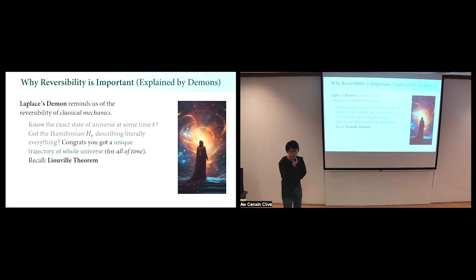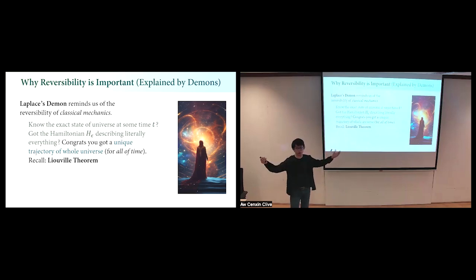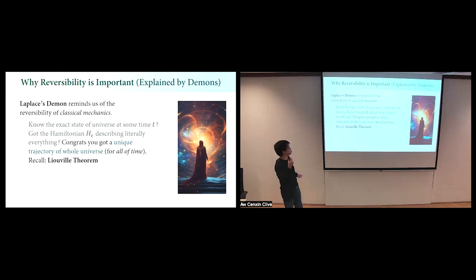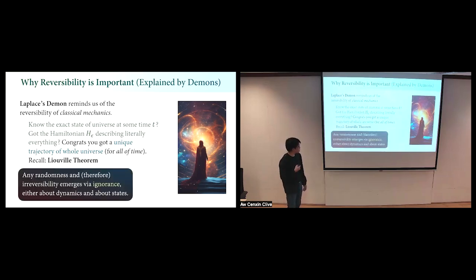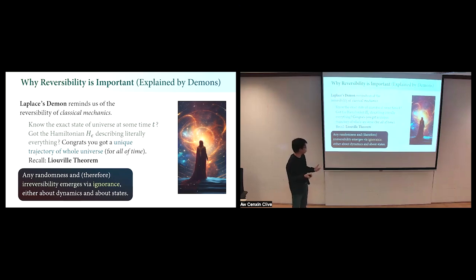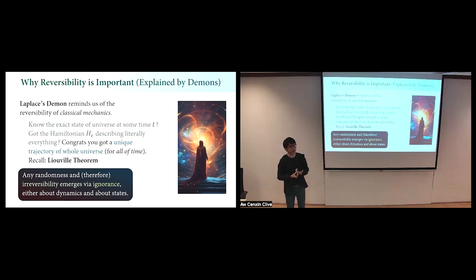Essentially, how does it go? If there's a kind of super-intelligent being - Laplace's demon - that has a cosmic Hamiltonian for everything that happens in the universe, and also has an exact state of the universe with infinite precision at some point in phase space, then he will be able to trace out a unique trajectory of the entire universe according to Hamiltonian and Lagrangian dynamics. Any randomness or irreversibility we perceive really comes from either not having the cosmic Hamiltonian or not having infinite precision on the state - basically, it comes from ignorance.